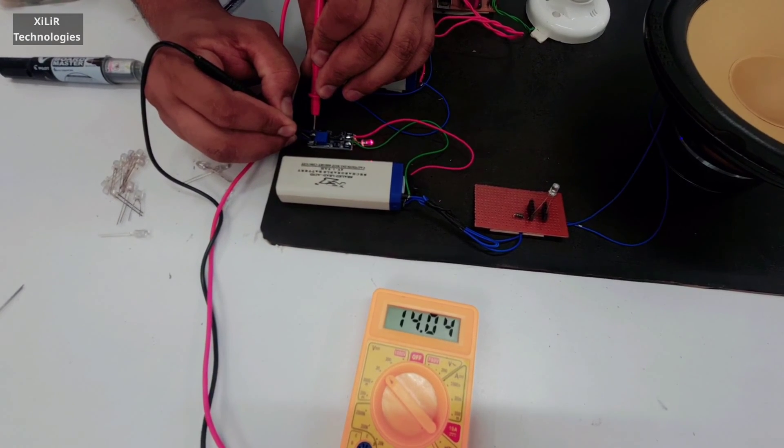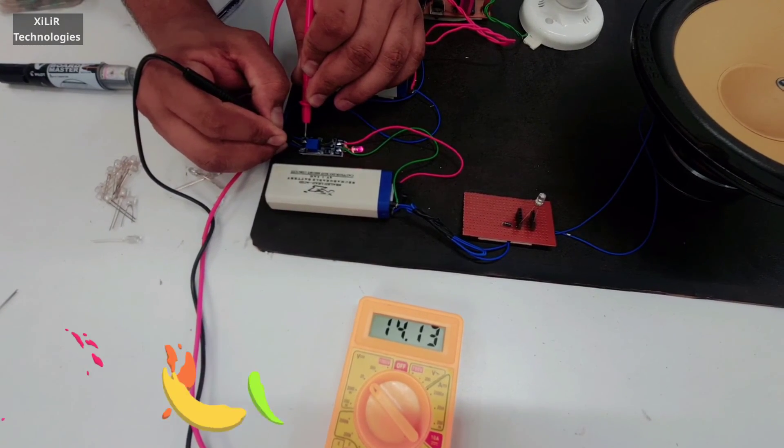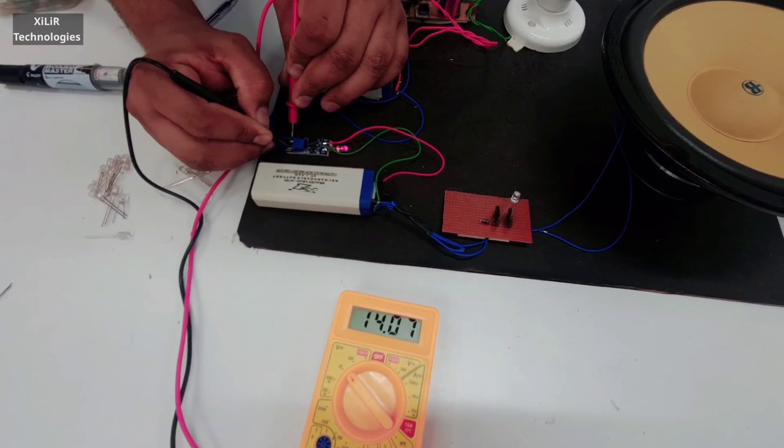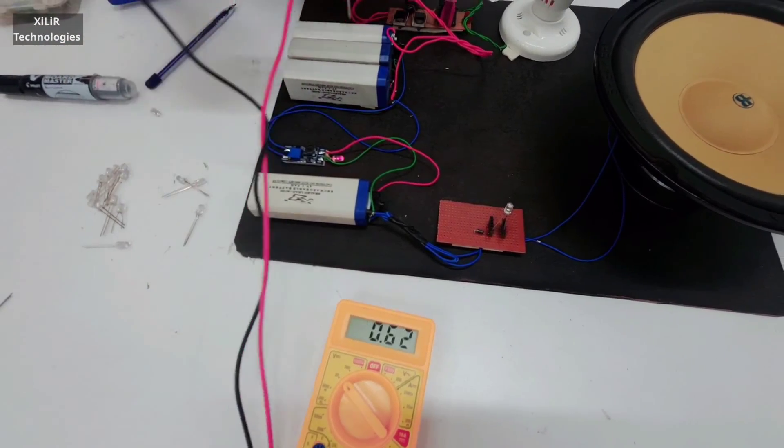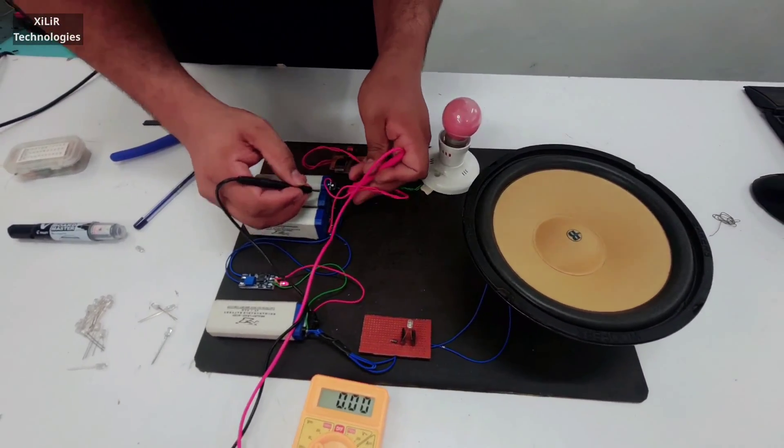This point we are having 14.3 or you can say 14.13 volt, you can see fluctuating. After that this is your 12 volt battery which is getting charged.